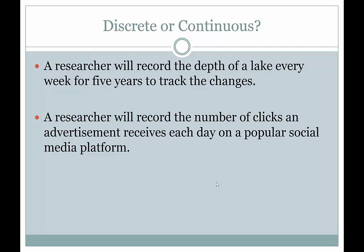Okay, if you look at the next example, it says a researcher will record the number of clicks an advertisement receives each day on a popular social media platform. A number of clicks is a count. You'd count how many clicks were received. It makes no sense to say something received 3.14 clicks, for example. So pi amount of clicks is illogical.